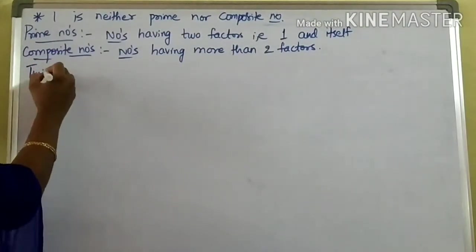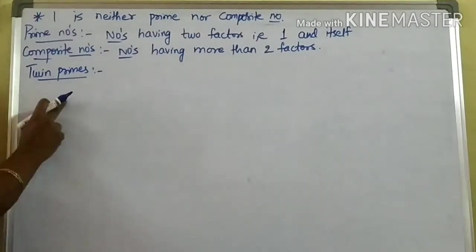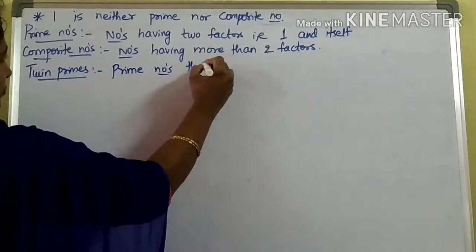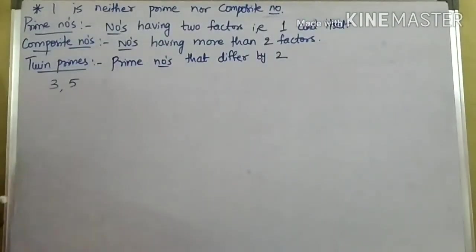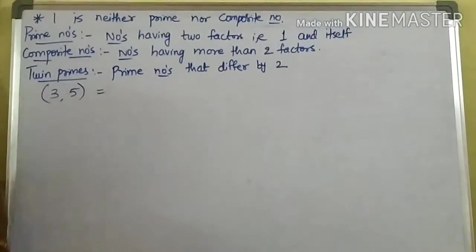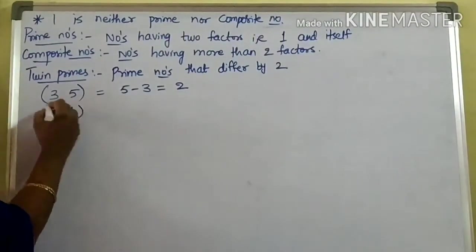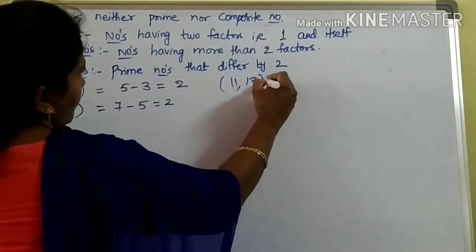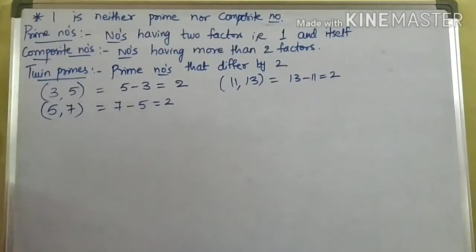Next I want to discuss what are twin primes. When two prime numbers differ by two, then we call them as twin primes — prime numbers that differ by two. For example, if I take three and five: three is a prime number, five is a prime number, and five minus three equals two. Another example: five and seven — seven minus five equals two. And next, eleven and thirteen — thirteen minus eleven equals two. So when the difference of two prime numbers is two, we call them as twin primes.